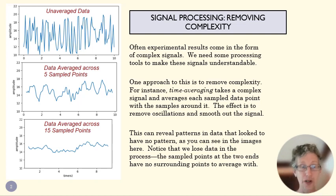Notice that we're losing data. If I'm averaging across 15 points, the last seven points here, I actually can't use anymore because I don't have seven points to the right of them. And these points over here, I don't have seven points to the left of them. So we lose basically half a second of data here and half a second of data there. And that's one of the costs of time averaging.